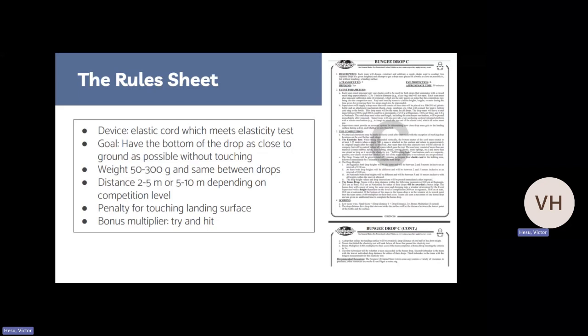The goal here is to have your device be as close to the bottom of the ground as possible without touching when it is dropped from the top of the testing device. The weight will be between 500 and 300 grams, and it's the same between all your drops. However, the distance can be between 2 to 5 meters, or 5 to 10 meters, depending on what level of competition you're at. The drop heights will be the same for regional levels, but will be different for state and national levels.